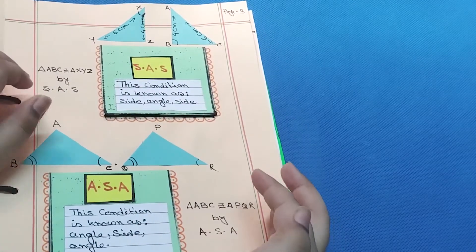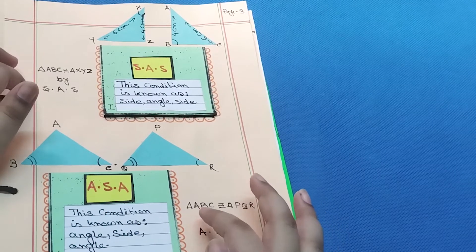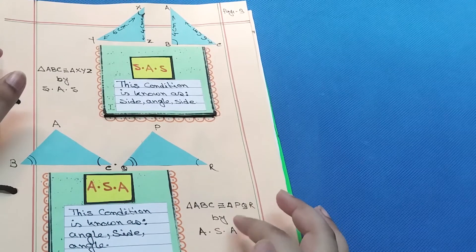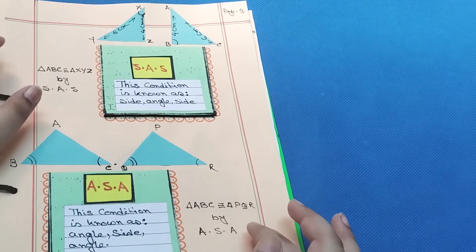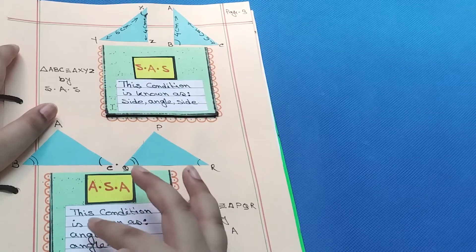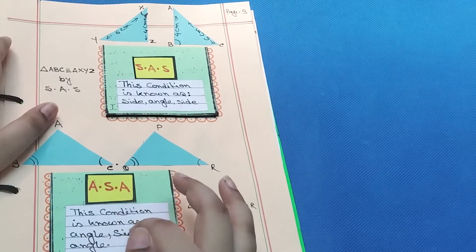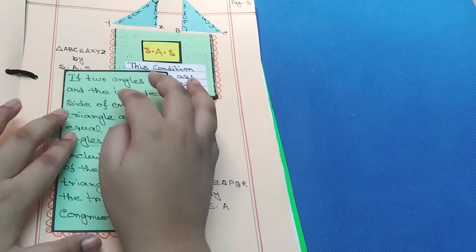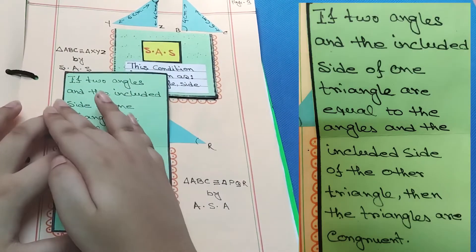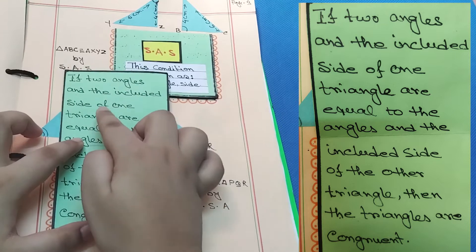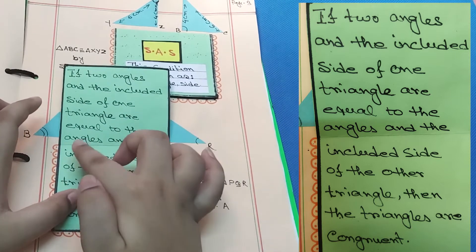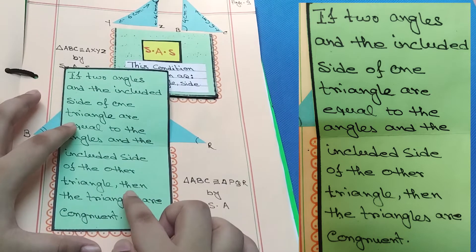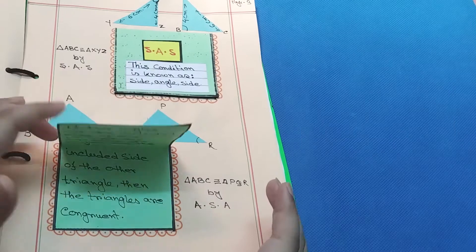I've drawn another figure here. This means triangle ABC equals triangle PQR by ASA. ASA, this condition is known as Angle-Side-Angle. If two angles and the included side of one triangle are equal to the angles and the included side of the other triangle, then the triangles are congruent.